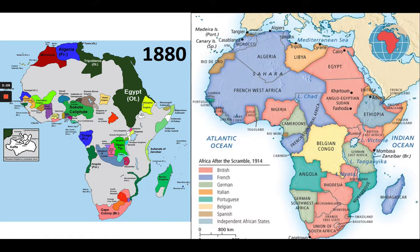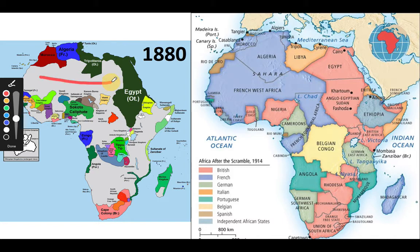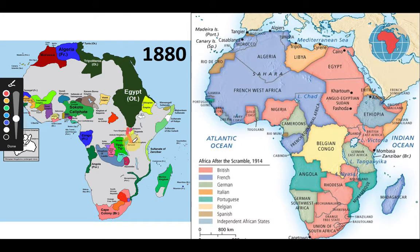Let's look at a map. In 1880, this is what Africa looked like — you didn't have a lot of large empires. Africa's geography has not lent itself to empire building. You have the Sahara Desert acting as a physical boundary, dense jungles, mountain ranges like the Ethiopian highlands, Lake Victoria, and in the south another desert. Geography doesn't lend itself to empire building.